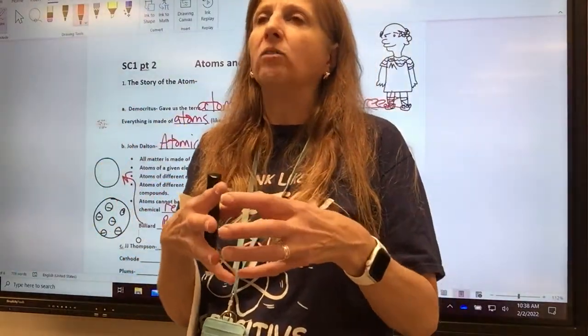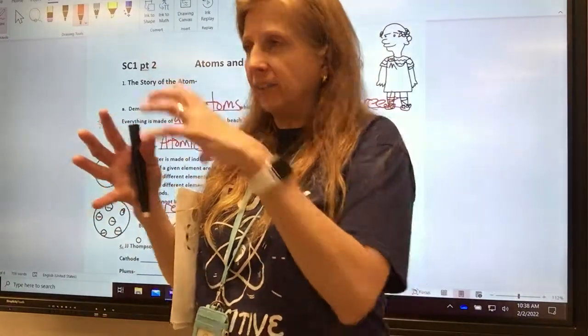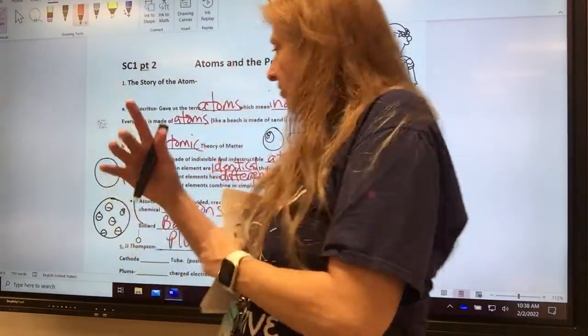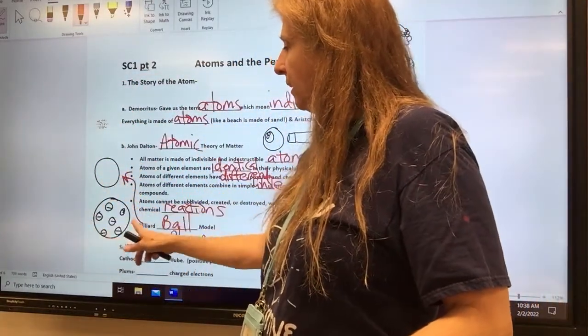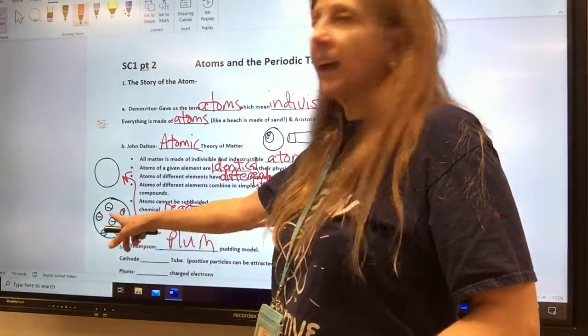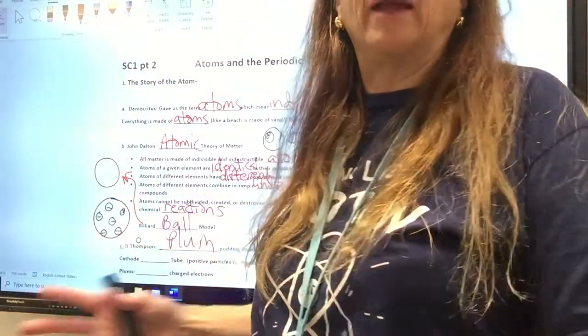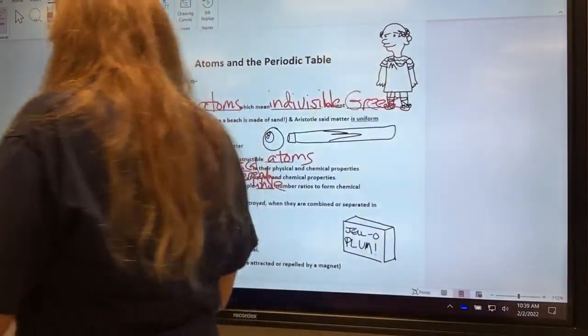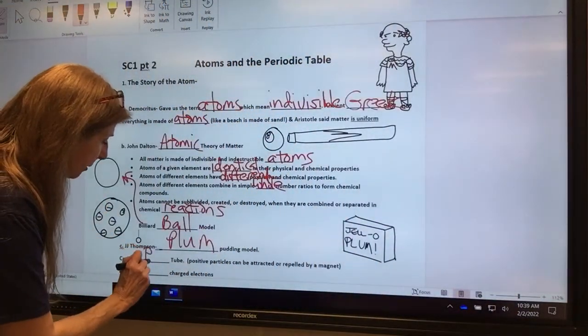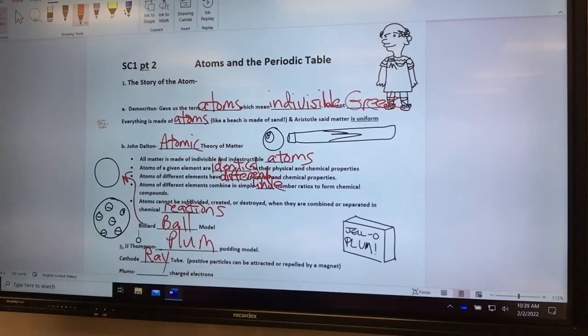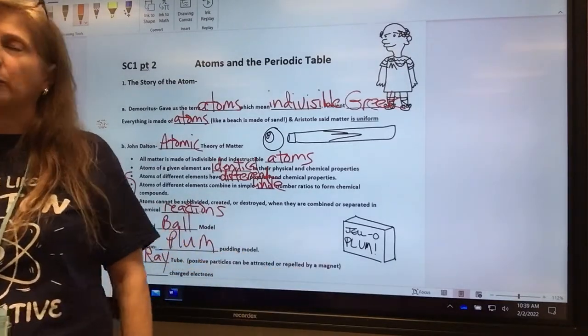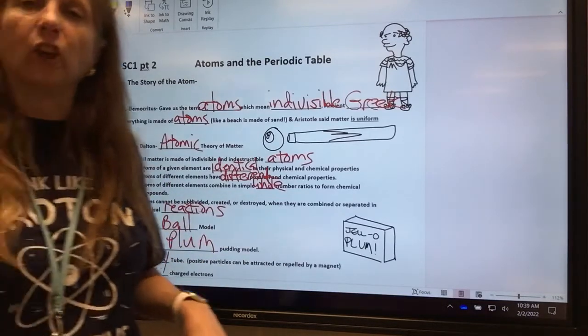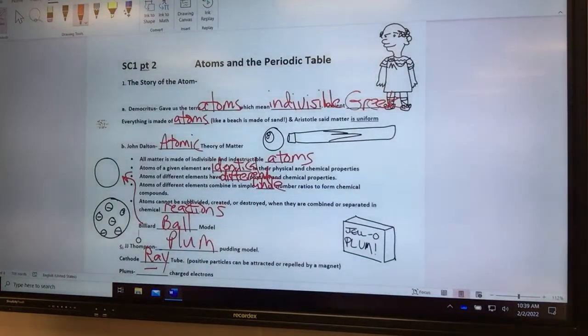You got one thing with embedded things in it. This is our model. This is our dish of pudding that's positive goo with negative plums, and they cancel each other out, making it overall neutral. The plums are the negatively charged electrons, and the goo is positively charged. That's our plum pudding.